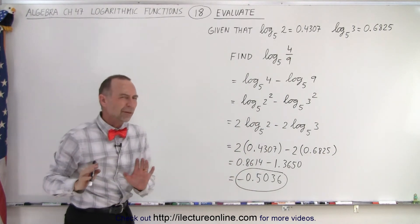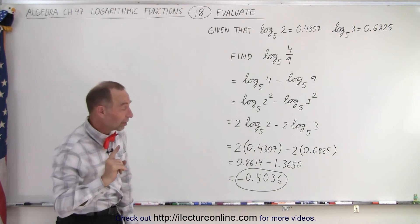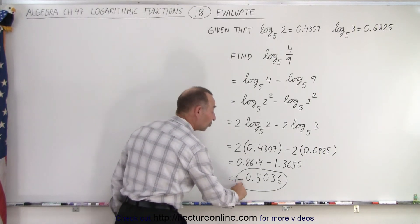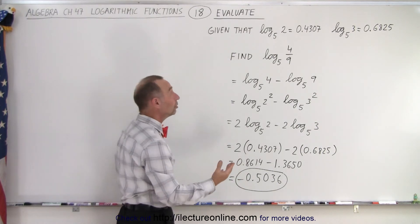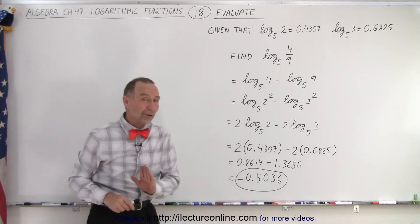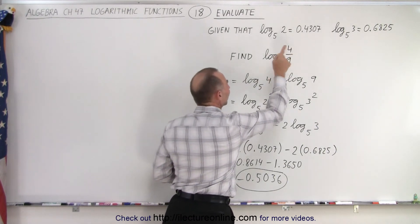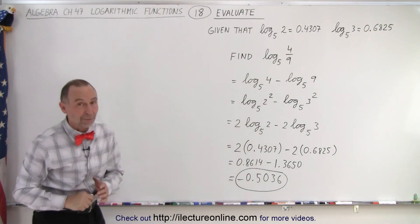Now, does that make sense? A quick check. Remember that the log of a number smaller than 1 should give us a negative result. We got a negative result, so that looks good. At least we know that the negative sign in front makes sense because we're taking the log of a number less than 1. And that is how it's done.